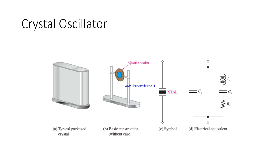This is the basic construction. The first item is the typically packaged crystal, which you can see on microcontroller boards and calculators as a mounted piece. The basic construction without a case has a quartz wafer placed between two metallic plates. The crystal symbol resembles a capacitive element with crystal wafers replacing the vacuum or dielectric. The equivalent circuit model is a parallel capacitor with a series RLC capacitor.